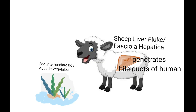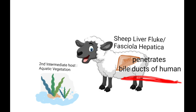This is the picture of sheep liver fluke, also known as Fasciola hepatica. The second intermediate host in this case is aquatic vegetation, and it penetrates the bile ducts of humans, so the site of disease is the liver.